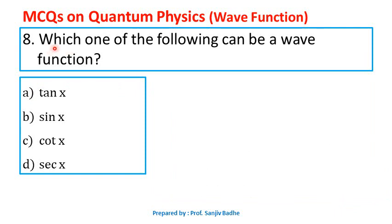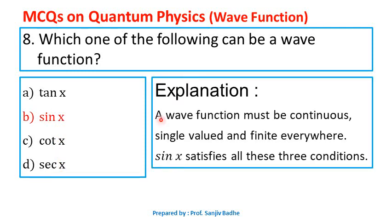Question number eight. Which one of the following can be a wave function? The options are: tan x, sin x, cot x, and sec x. A wave function must be continuous, single-valued, and finite everywhere. Out of these four functions, only sin x satisfies all these conditions — sin x is continuous, single-valued, and finite everywhere. Therefore, the answer to this question is sin x.